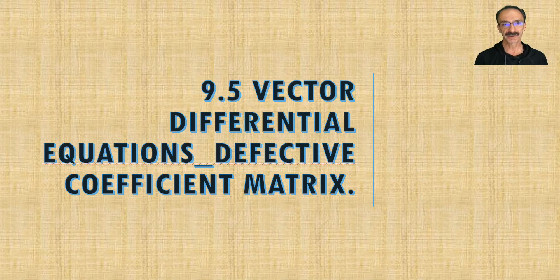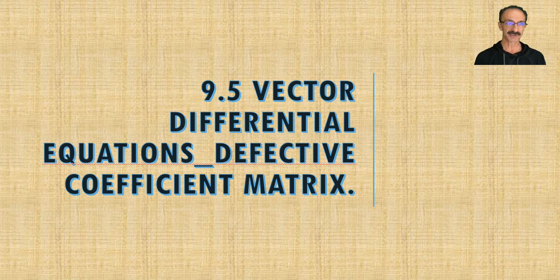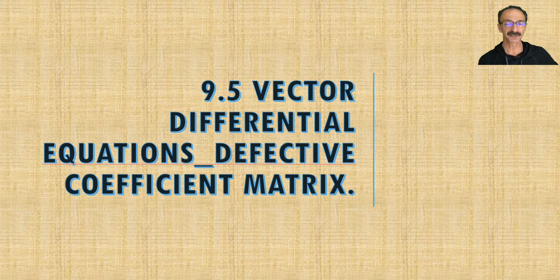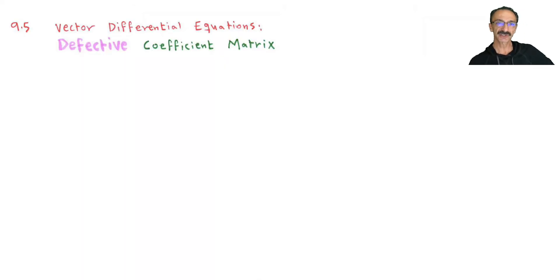This is 9.5 vector differential equations, this time for a defective coefficient matrix. Last time it was quick for non-defective — I gave you two examples: one for regular lambdas and vectors with real numbers, and the second for imaginary conjugates, pulling out real parts. Now we handle the defective ones where we don't have enough vectors.